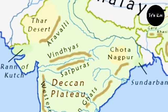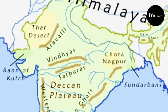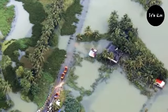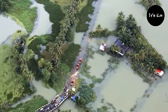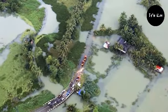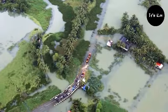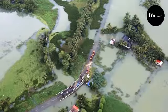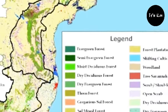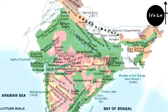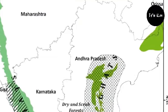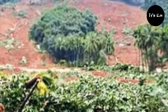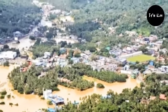Mawsynram in Meghalaya gets the highest rainfall in the country. The climate conditions have a great influence on the country's economy. The southwestern monsoon controls agriculture, which is the main occupation of India. The failure of rainfall leads to drought, and excess monsoon causes floods, both causing destruction to life and property. Hence, Indian agriculture is called 'a gambling with the monsoon.'